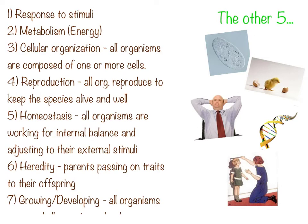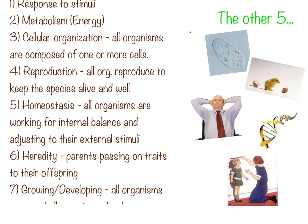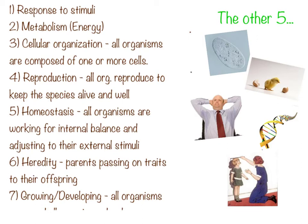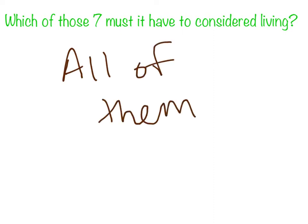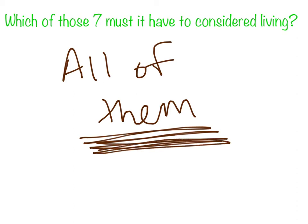Those are the seven properties of life. For something to officially be considered living, it actually has to have all of them — it has to have or have had all seven traits at one time or another. The activity we're going to complete in class covering this material is going to further cover those properties of life and help you to better understand and apply them. That's how we deem something as living or not living.